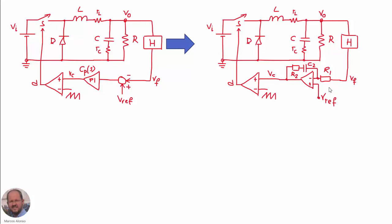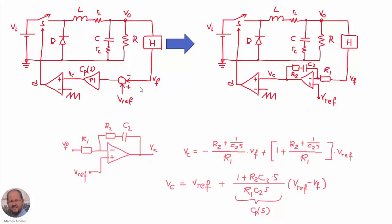Usually this closed-loop operation is implemented by measuring the output voltage and sending it into the PI compensator. But in this PI compensator we are implementing both the subtractor and the PI compensator together in one circuit. If we analyze this circuit in detail, we will see that this implementation is not exactly the same as having them separately.